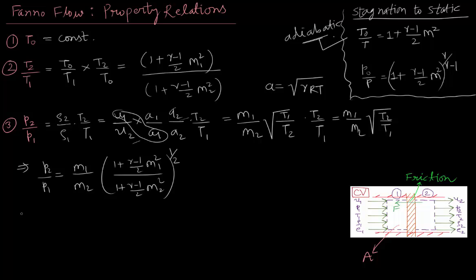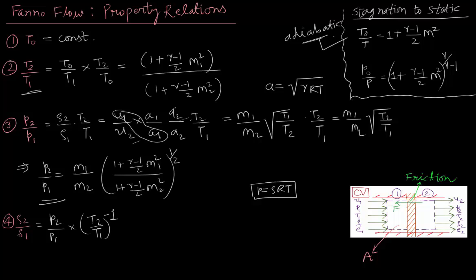Next, we will consider the density ratio. From the equation of state P equals rho RT, we know that rho 2 by rho 1 becomes (P2 by P1) times (T2 by T1) to the power minus 1. We have already derived T2 by T1 and P2 by P1, so rho 2 by rho 1 comes out to be (M1 by M2) times the square root of (1 plus (gamma minus 1) by 2 times M2 squared) divided by (1 plus (gamma minus 1) by 2 times M1 squared). This is our density ratio rho 2 by rho 1.